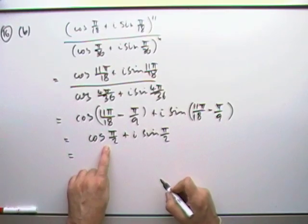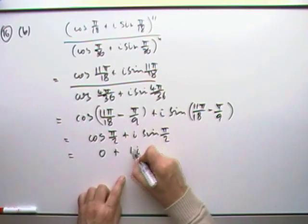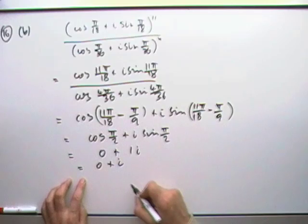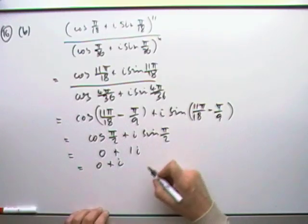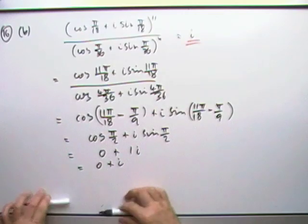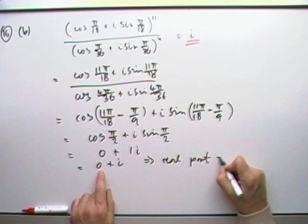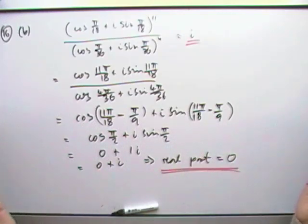Well, cos(π/2), the cos of 90 degrees is 0. So I've got 0 plus 1 times i. So I've got 0 plus i for the number. So that means that actual answer is just i. That all just comes to i. But then what that says is, the real part equals 0. There it is.